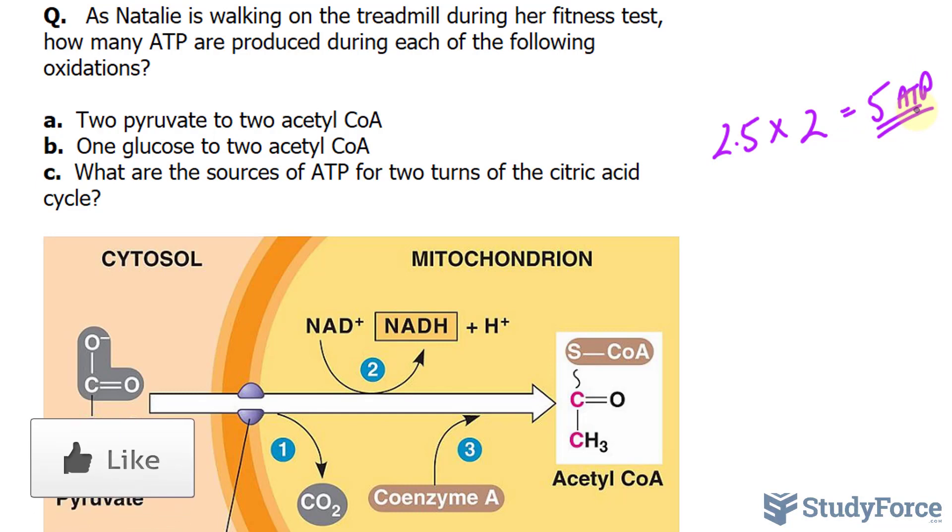In part B, one glucose to two acetyl-CoA. So we assume that the first stage is glycolysis in energy production. And in glycolysis,